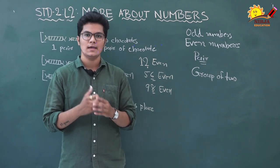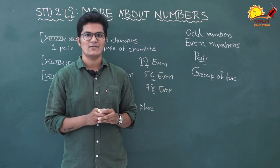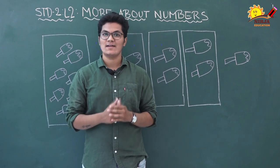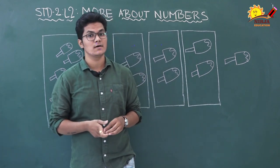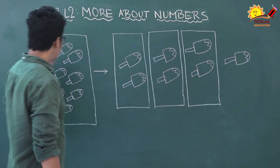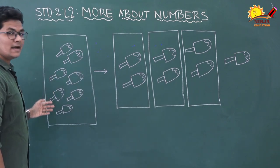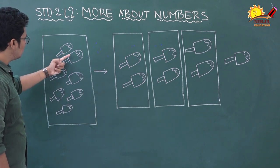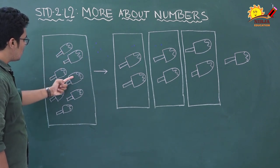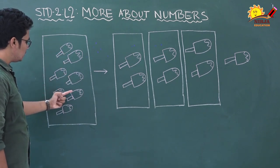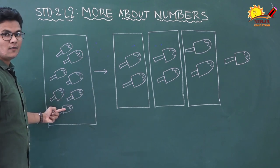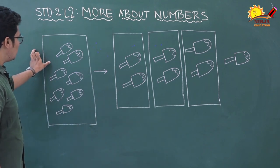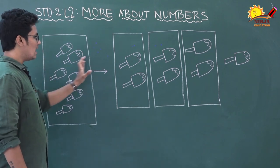The numbers that we can divide into pairs of two are all even numbers. Now let's see what are odd numbers. You can see several ice creams on the board. How many ice creams are there? Let's count — one, two, three, four, five, six, seven. So there are seven ice creams on the board.